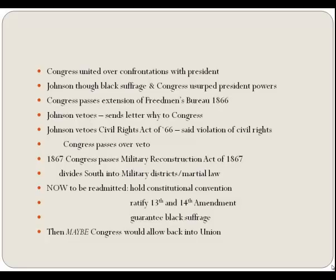In response, Congress passed the Freedmen's Bureau bill five months later over Johnson's veto. Johnson also vetoed the landmark Civil Rights Act of 1866, which defined as citizens all persons from the United States except Native Americans, and listed rights including the right to testify in court, own property, make contracts, and enjoy the full and equal benefit of all laws and due process. It authorized federal officials to bring suit in federal rather than state courts for civil rights violations. Johnson tried to strike it down as a violation of states' rights, expecting his veto to appeal to anti-Black sentiment among Northern voters. In April, Congress passed the act over his veto—the first time Congress had overridden a veto on major legislation.